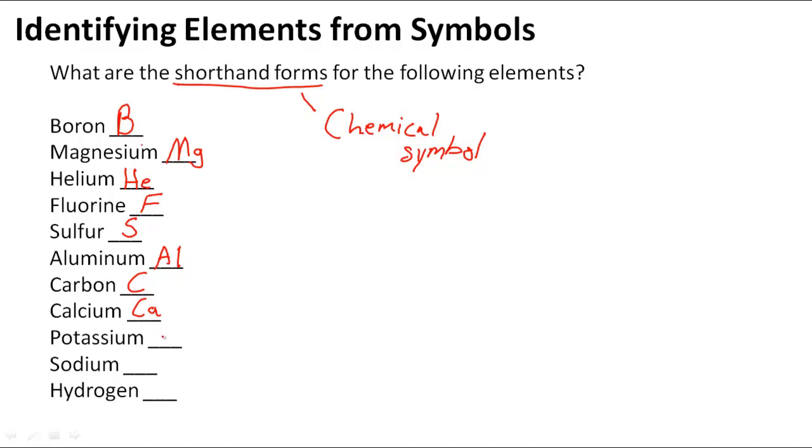Potassium is a weird one. Actually its symbol is K and that comes from its Latin name. And sodium which is Na, also coming from a Latin name. And hydrogen which is H. Those are the chemical symbols for all of those elements.